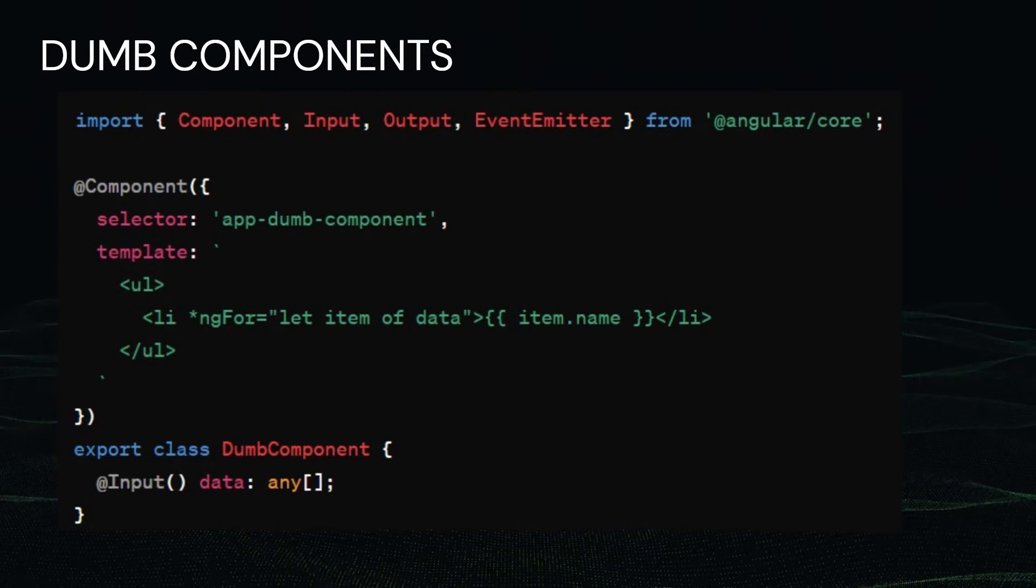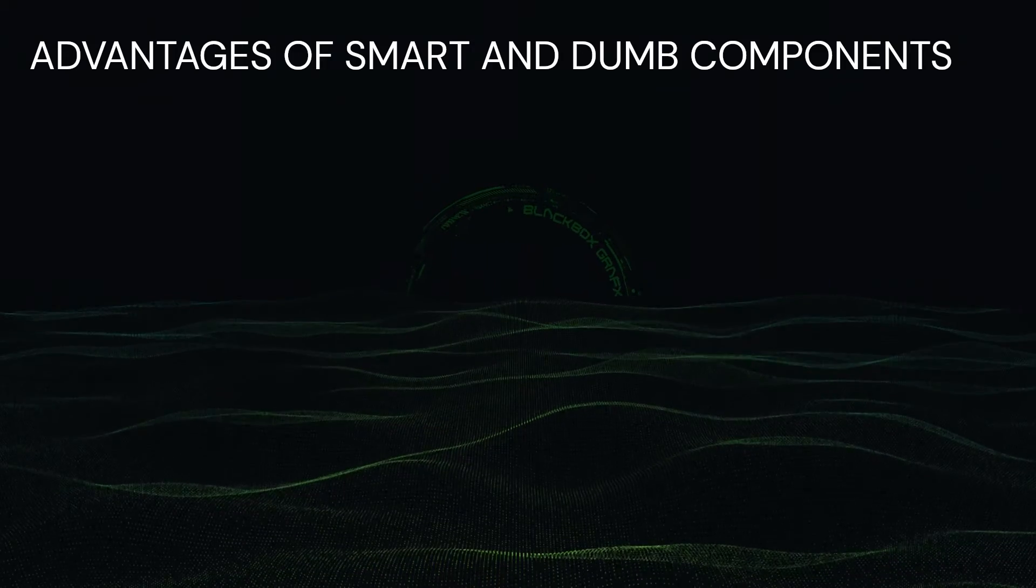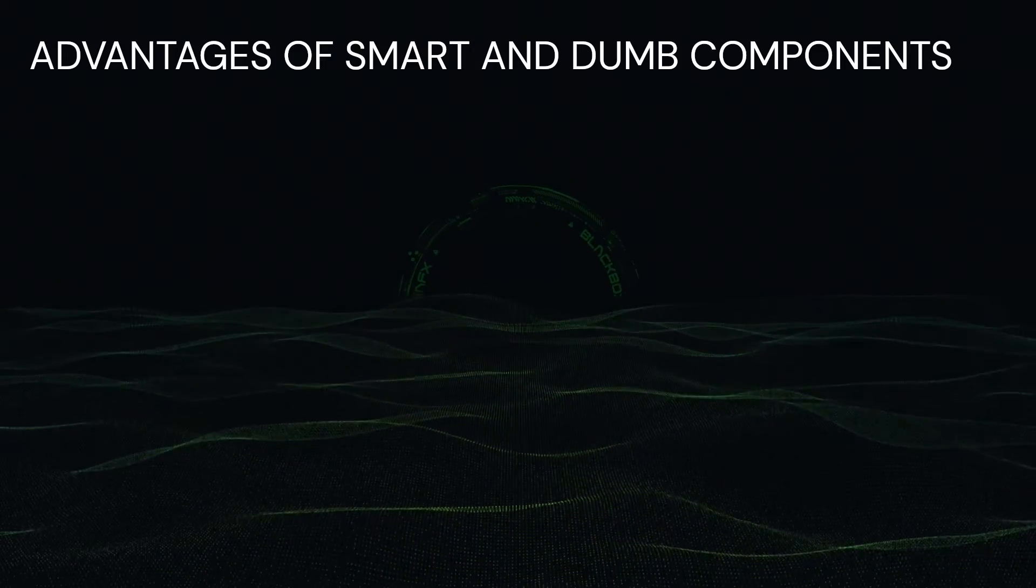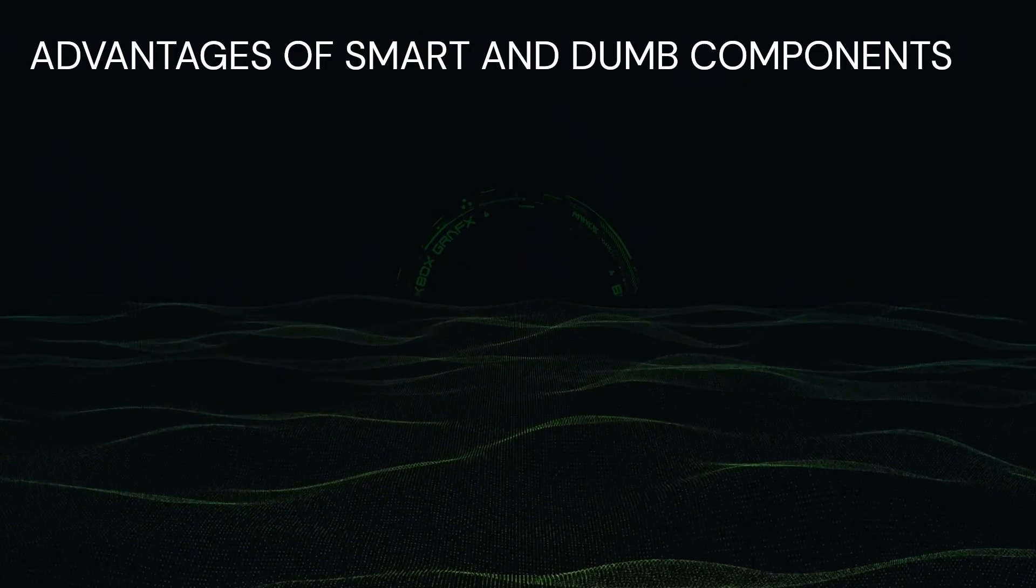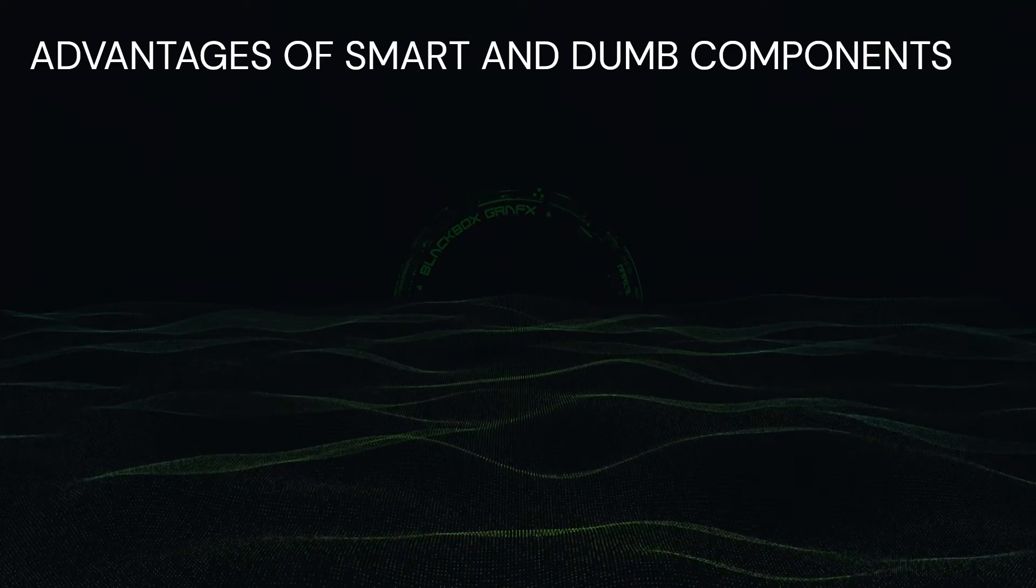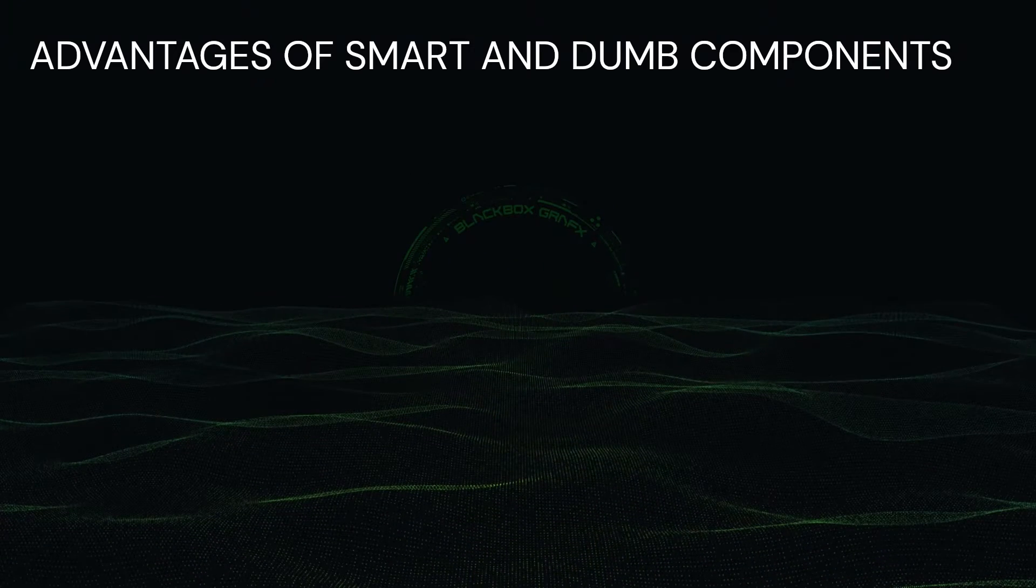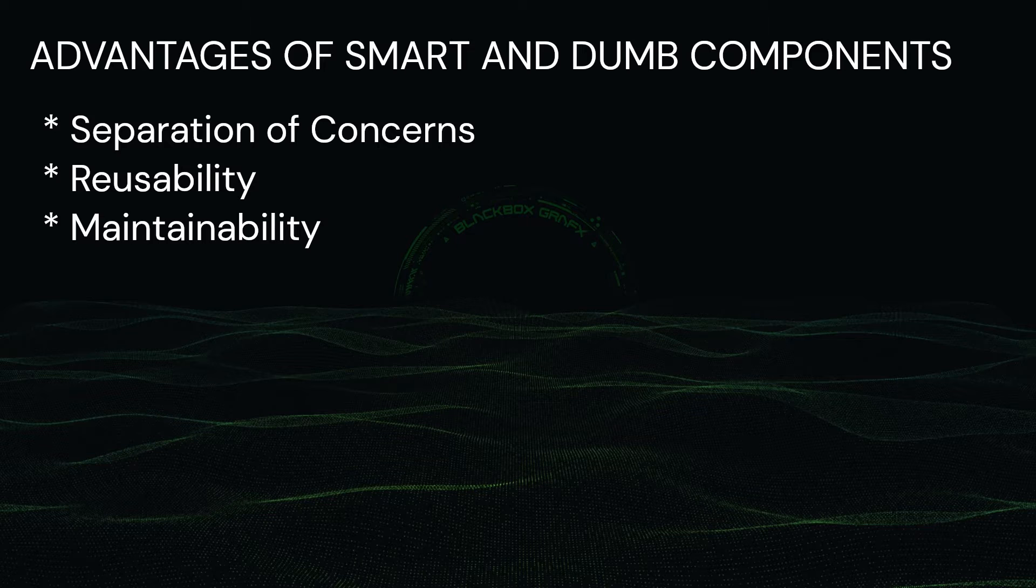So what are the advantages of smart and dumb components? Why use smart and dumb components? The main benefits I already explained: separation of concerns, reusability, and maintainability.